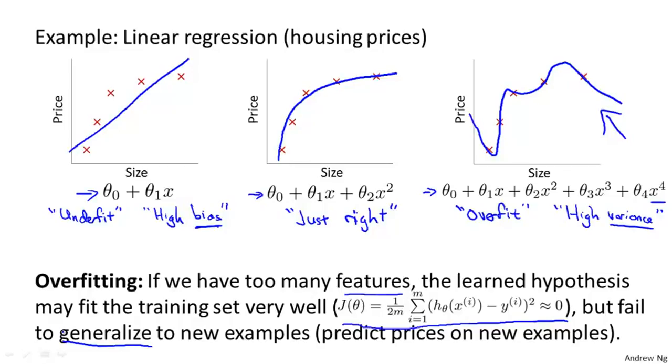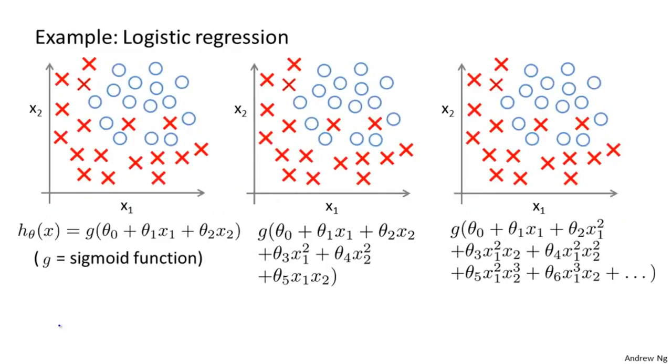On this slide, we looked at overfitting for the case of linear regression. A similar thing can apply to logistic regression as well. Here's the logistic regression example with two features, x1 and x2. One thing we could do is fit logistic regression with just a simple hypothesis like this, where, as usual, g is my sigmoid function. And if you do that, you end up with the hypothesis trying to use maybe just a straight line to separate the positive and the negative examples. And this doesn't look like a very good fit to the hypothesis. And so, once again, this is an example of underfitting or of a hypothesis having high bias.